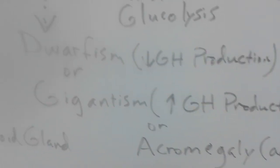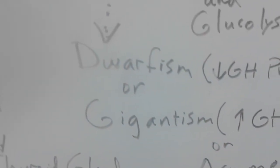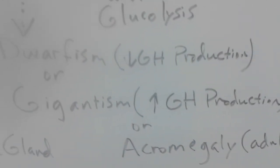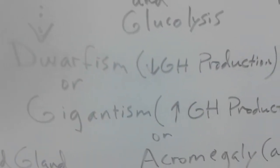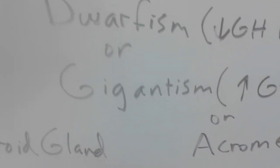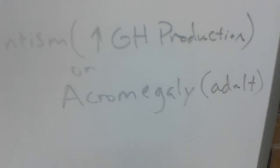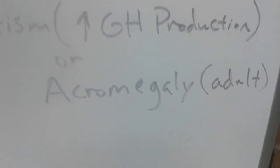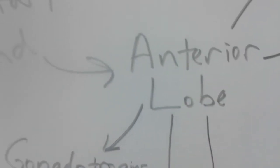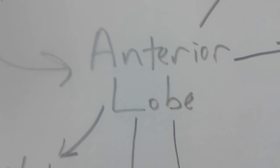So you know with growth hormone if we have too little of it being produced we can see dwarfism. Some of you guys have seen the TV show Little People Big World, that's dealing with dwarfism. It's a lack of production of GH, of growth hormone during their development stage. Also if we have too much GH being produced during the development stage that can lead to gigantism. If we see too much GH being produced during their adult phase that can lead to acromegaly.